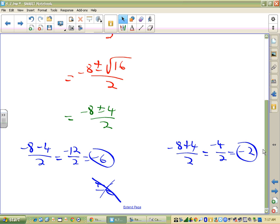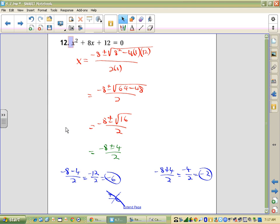So we could have solved by factoring. But on number 12, solving it with the quadratic formula, looks like that. You get negative 6 and negative 2.